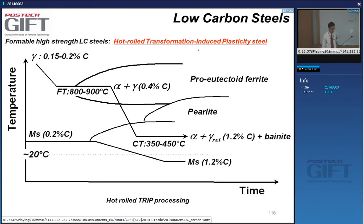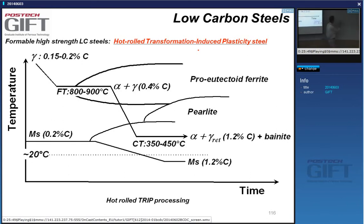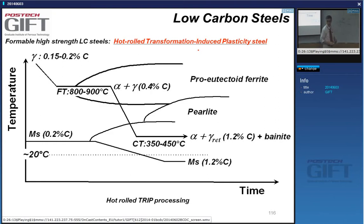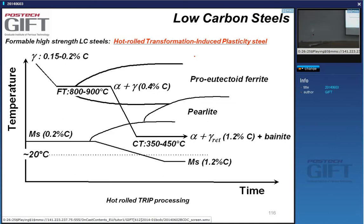Chrome and molybdenum may be added sometimes to suppress pearlite formation, but are not commonly added to cold-rolled TRIP steels. TRIP steels can also be made via hot rolling — no problem. For cold-rolled material the starting microstructure is ferrite plus pearlite, and you do intercritical annealing followed by the bainite transformation in your continuous annealing line.